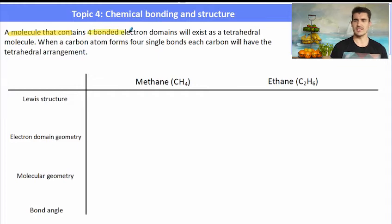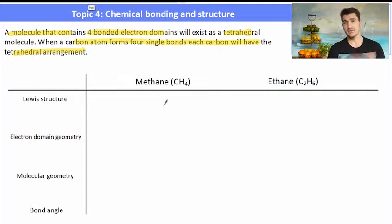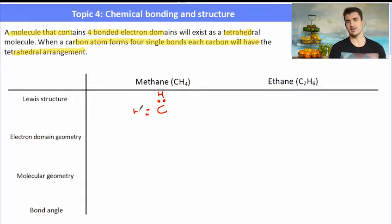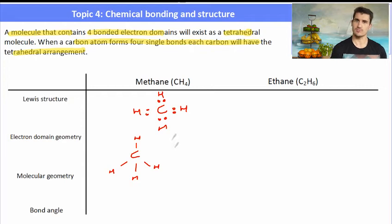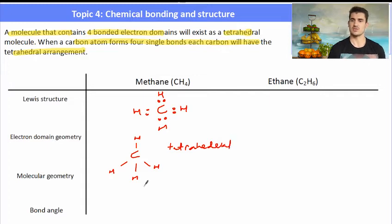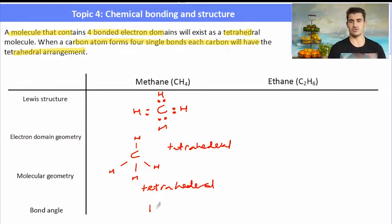If we have a molecule that contains four bonded electron domains, it will exist as a tetrahedral — that is a carbon with four single covalent bonds. So if we have a molecule like methane, a carbon with four hydrogens attached to it, this will have four electron domains in a tetrahedral arrangement. Its electron domain geometry is described as tetrahedral, and its molecular geometry is also described as tetrahedral. The bond angle is 109.5 degrees and you need to remember that.